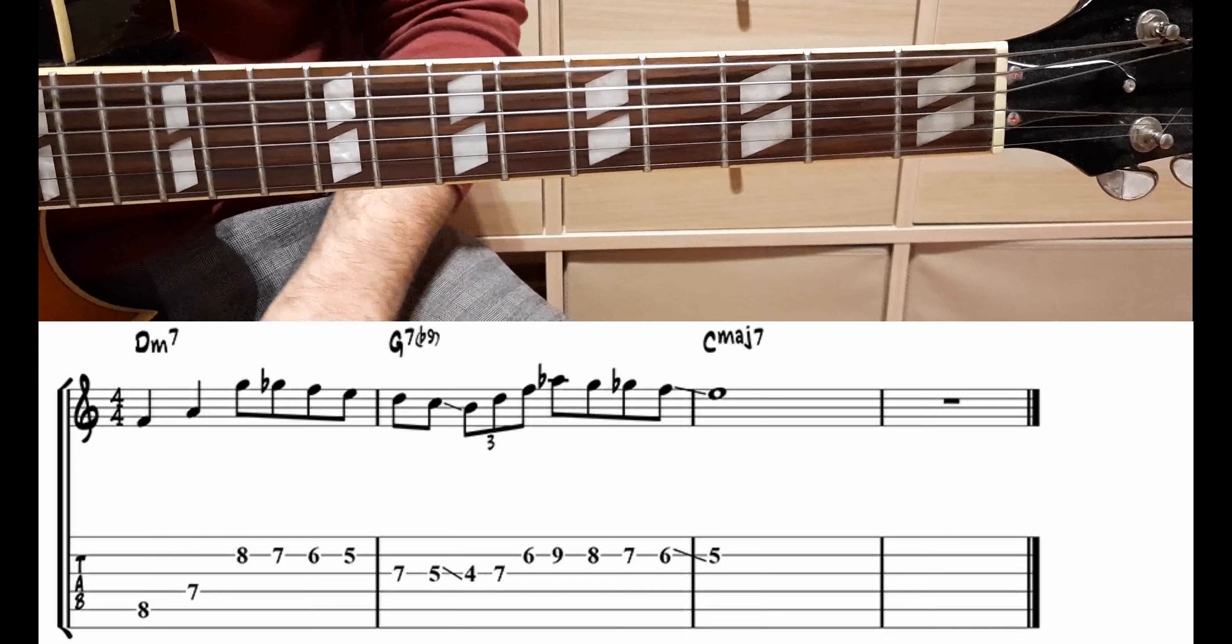Altra discesa cromatica sulla quinta corda, dal tasto 9, quindi La bemolle, Sol, Sol bemolle, Fa e Mi.